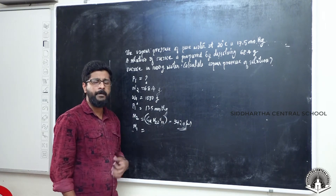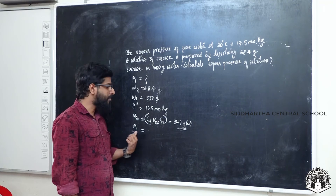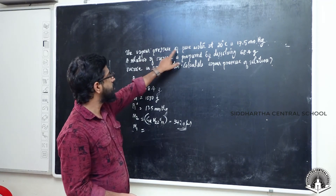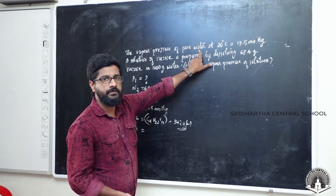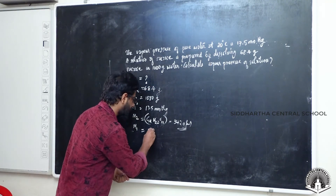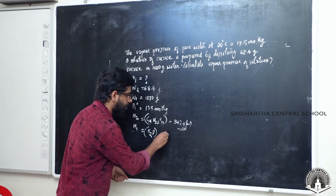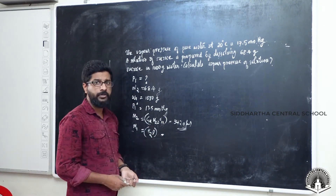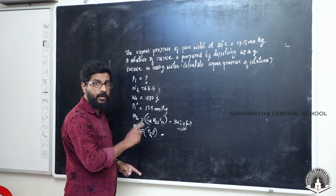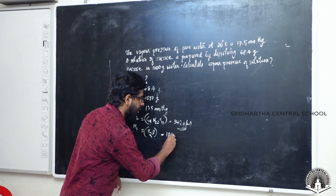Now M1 is the molecular mass of the solvent. The solvent here is water, with molecular formula H2O. So the molecular mass is: 2 hydrogens × 1, plus 1 oxygen × 16, which gives 2 + 16 = 18 grams per mole. So M1 equals 18 grams per mole.